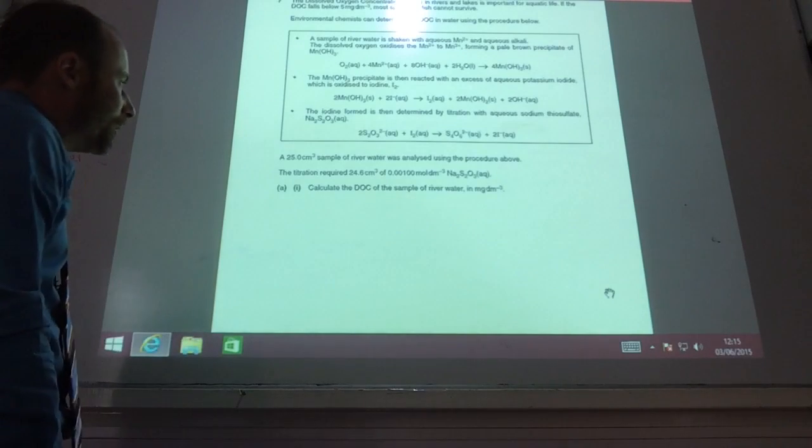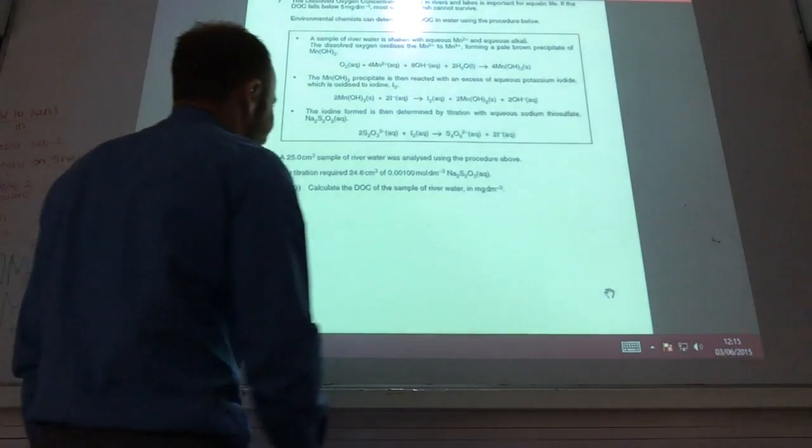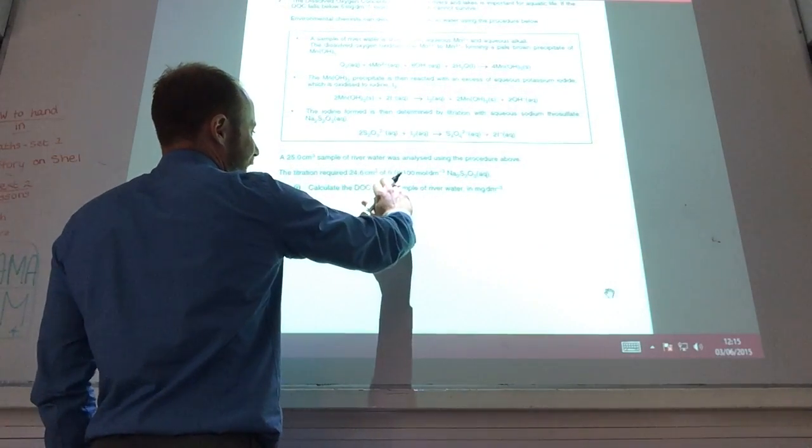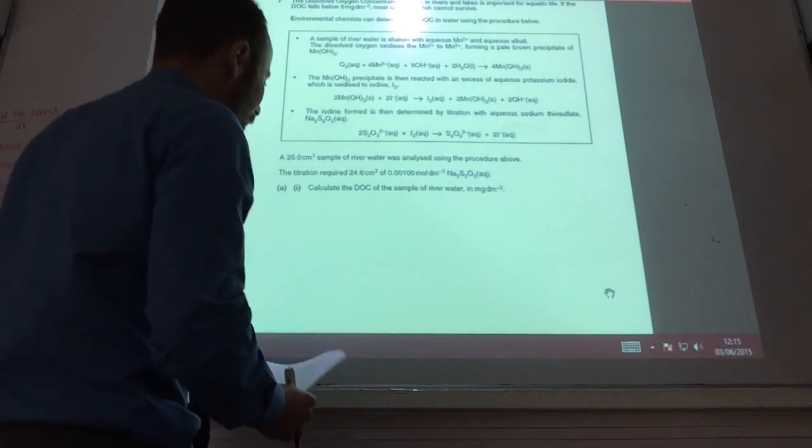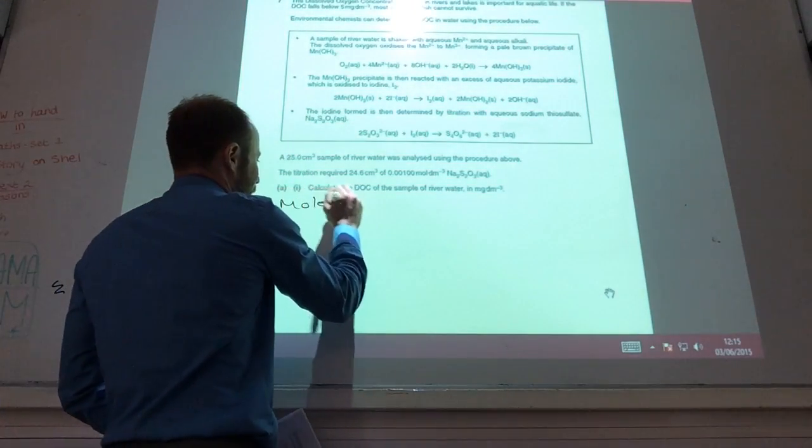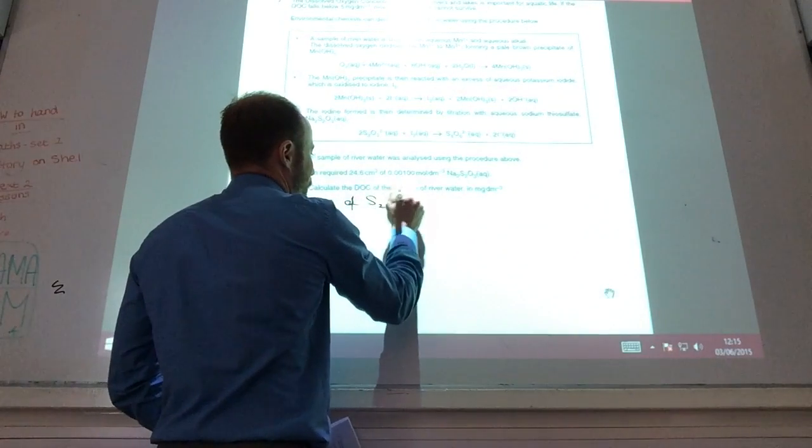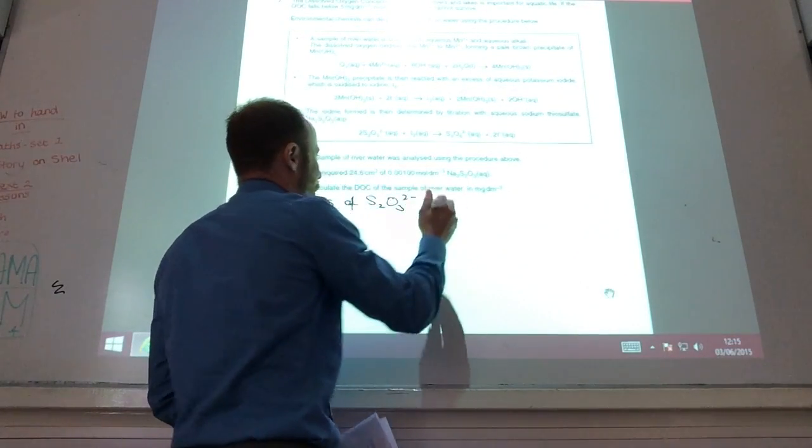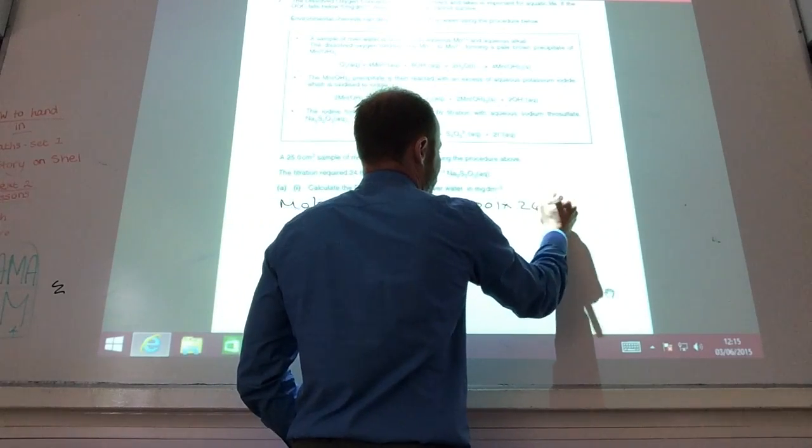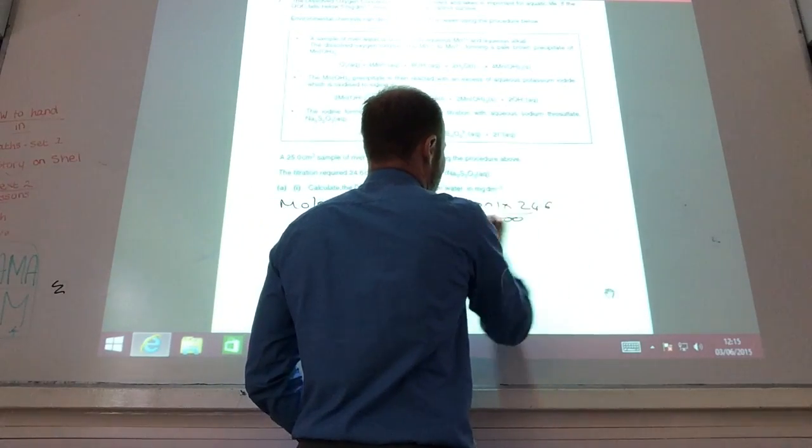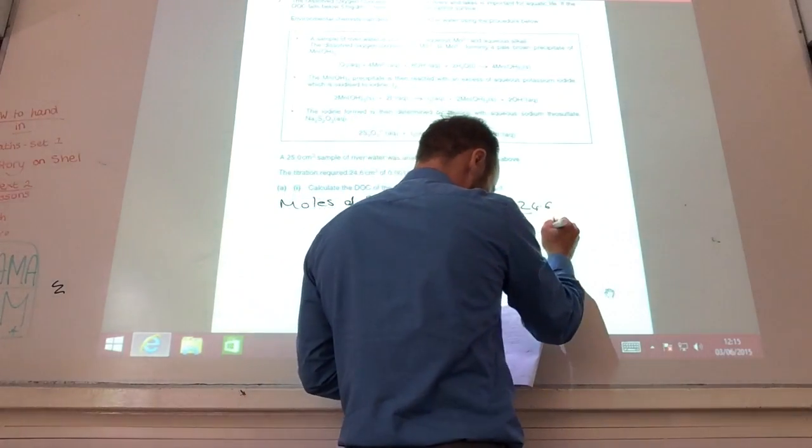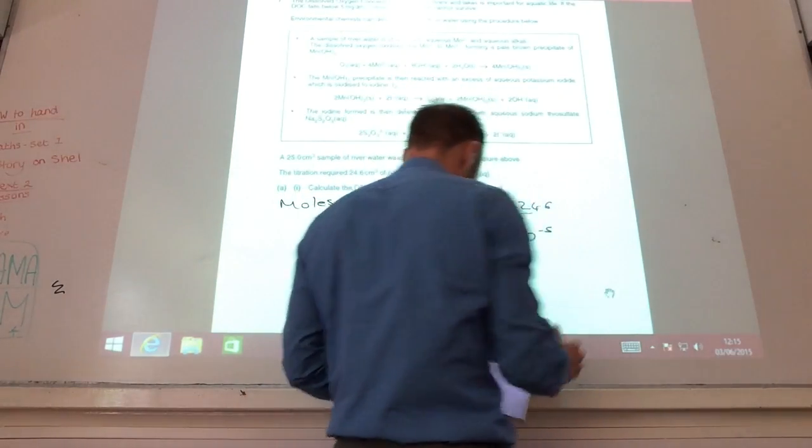So first of all, it's a titration. The titration requires 24.6 cm³ of 0.001 moles. So let's just bash it and let's work out the moles of S₂O₃²⁻. That's your concentration times your volume over 1000, and that will give you 2.46 times 10 to the minus 5 moles.